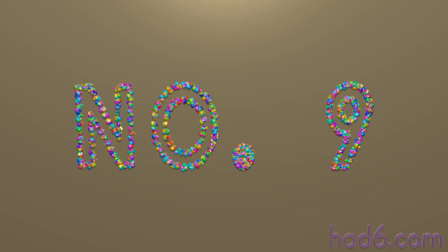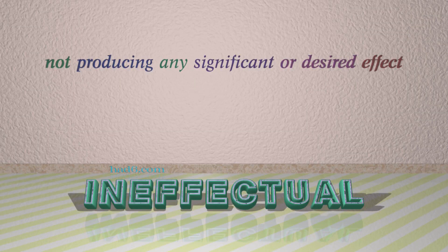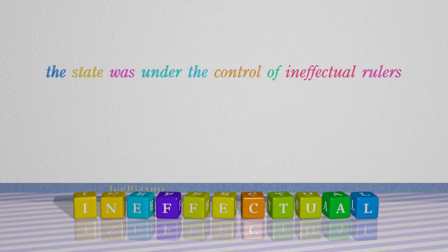Number 9: Ineffectual. For example: The state was under the control of ineffectual rulers.